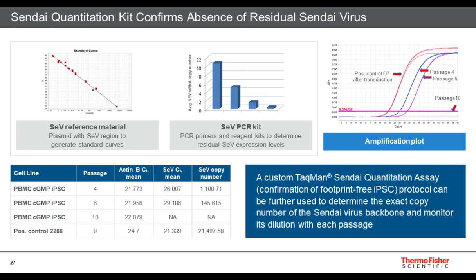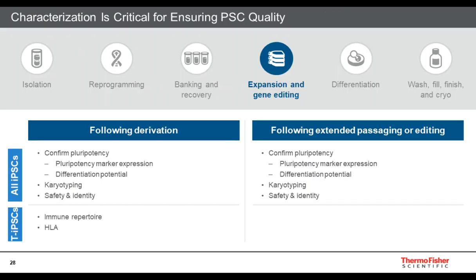We also have the Sendai Quantification Kit. When doing iPSC induction, you want to make sure the Sendai virus that you used for reprogramming no longer exists when you utilize the cells for therapy downstream and injection back into the human. We took PBMCs that we made into iPSCs and measured Sendai virus expression. After passage 4, 6, and 10, we have complete removal of the Sendai virus footprint. So you can have good confidence that you've removed the iPSC-inducing Sendai virus before proceeding with your planned therapy downstream.